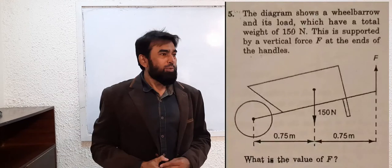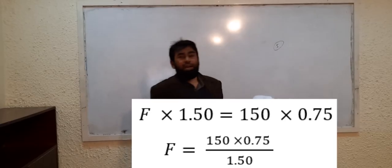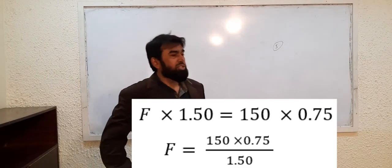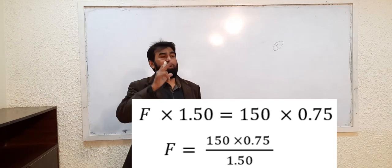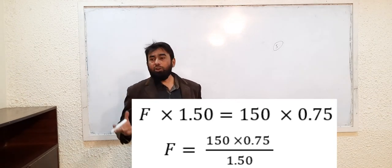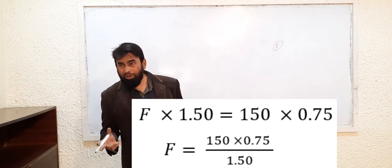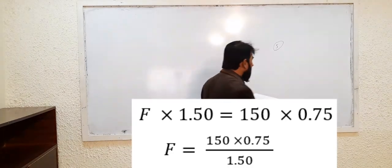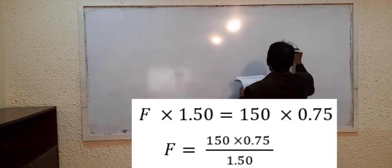The diagram shows a wheelbarrow and its load which have a total weight of 150 Newton. This is supported by a vertical force F at the ends of the handles. What is the value of F? I told you that whenever you are taking that distance, you have to take it from the pivot. Clockwise and anti-clockwise moments must be taken from the pivot. In this question you can see there's a wheelbarrow like this.